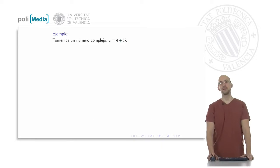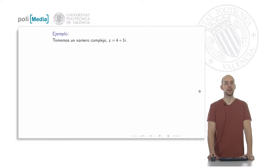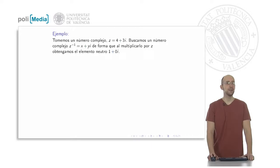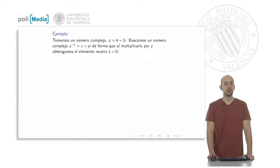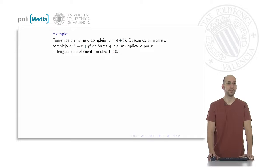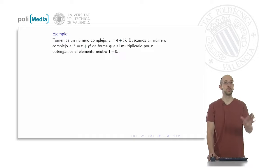Today's objective is to calculate this inverse number. Let's start with an example using numbers — I think it is easier to see it with numbers before the general formula. We are going to take the complex number four plus three i and try to calculate its inverse. We denote the inverse as x plus yi, where x and y are the unknowns we are trying to find.